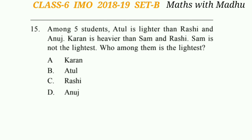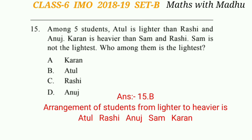Now question number 15. Among five students, Atul is lighter than Rashi and Anuj, Karen is heavier than Sam and Rashi, Sam is not the lightest. Who among them is the lightest? If we arrange the students from lighter to heavier, the arrangement will be: Atul, Rashi, Anuj, Sam, and Karen. So the lightest student will be Atul. The answer will be option B. Thanks for watching.